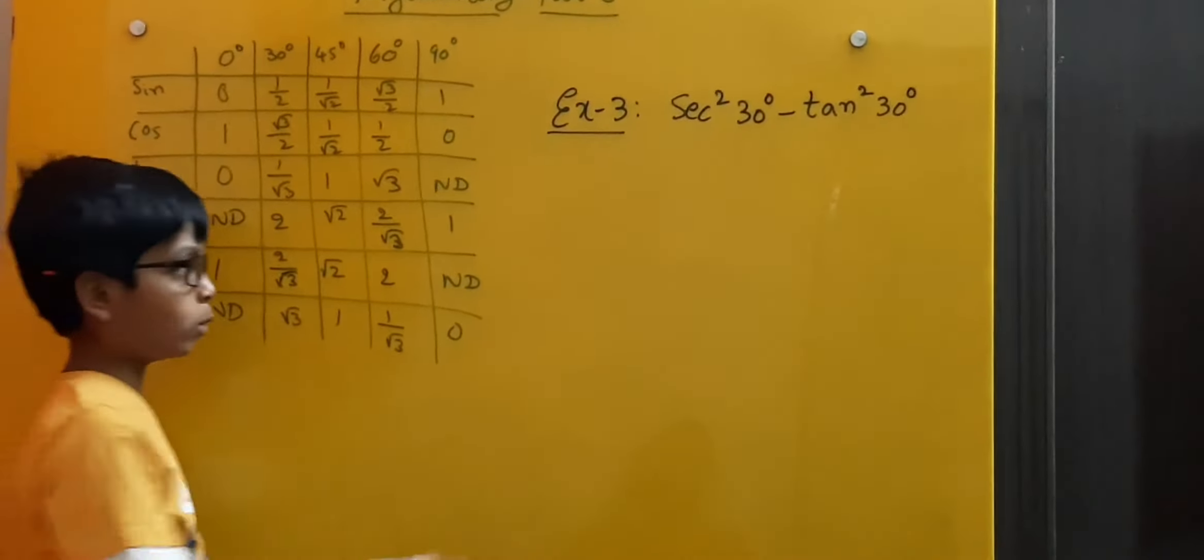Now let us solve another example. We know that tan 30 degrees is equal to 1 by root 3. Now let us substitute the values: 2 into 1 by root 3 by 1 minus 1 by root 3. Here as it is square, so we write whole square.